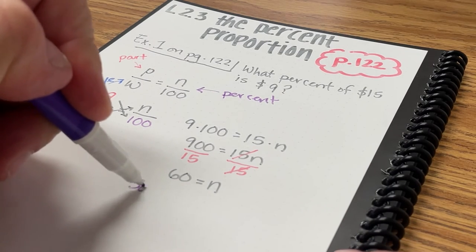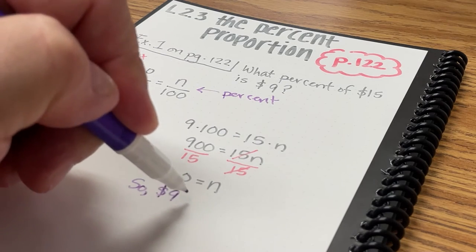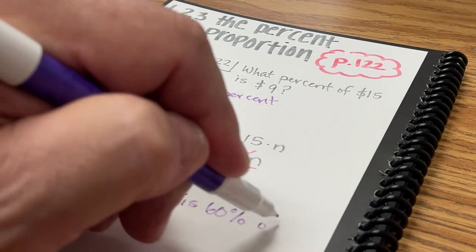So now I can say that 9 dollars is 60% of 15 dollars.